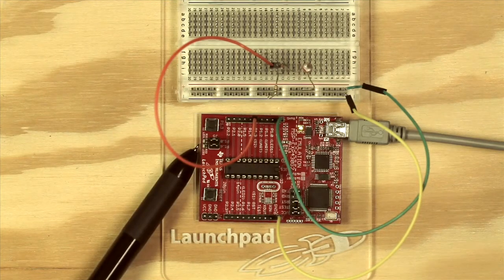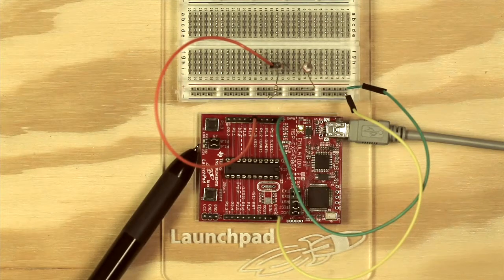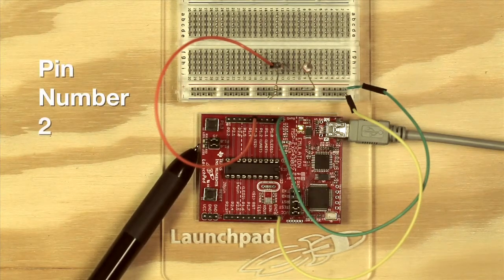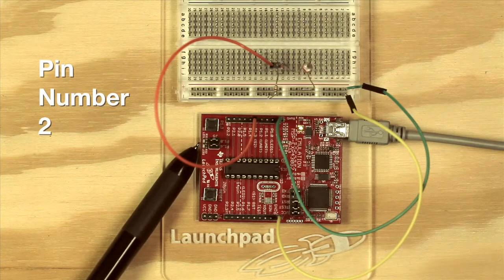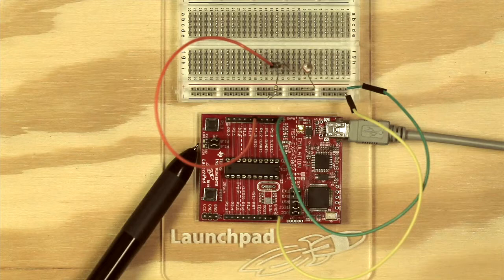Secondly, we're going to use our internal LEDs on our MSP430G2 launchpad, which are connected to pin number 2, or P1.0, for the red LED, and pin number 14, or pin P1.6, for the green LED.